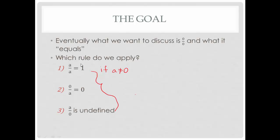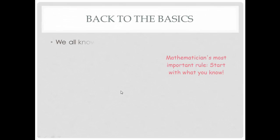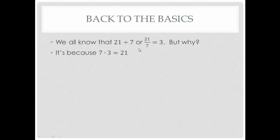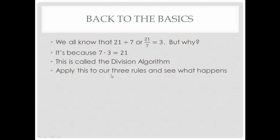But we can start with these and see why they're true. For example, 21 divided by 7, 21 over 7 equals 3. That's not news to us. But why? The reason is because 7 times 3 is equal to 21. That's what we refer to in math as the division algorithm. So if we apply this to our three rules, we can kind of see where this is going to lead us.